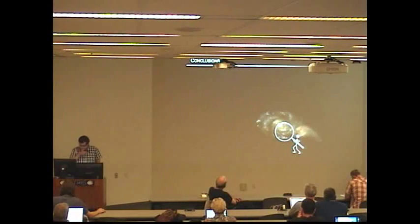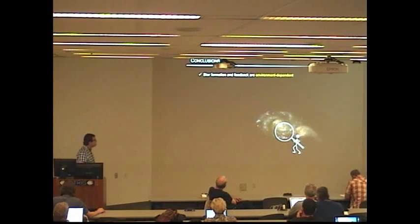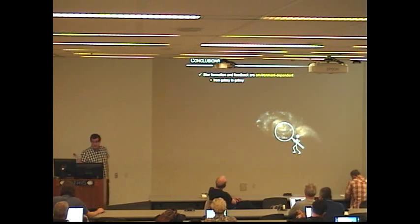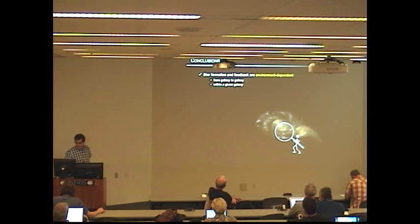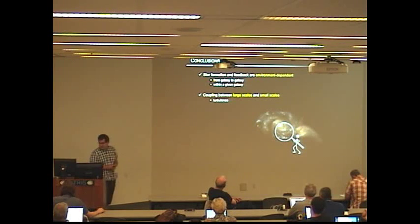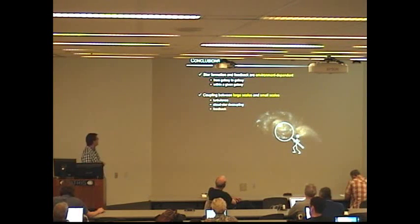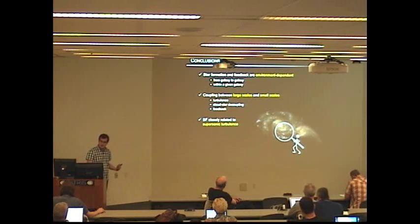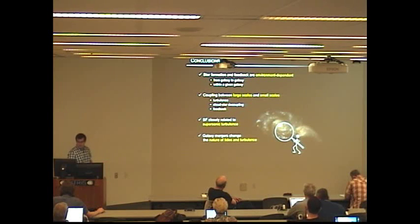So, now I'm reaching my conclusions. Star formation and feedback are environment-dependent. From galaxies to galaxies, obviously, but also within a given galaxy. Don't forget that. There is a coupling between large scales and small scales. Through turbulence, through cloud-star decoupling, for example, through feedback. Star formation is closely related to supersonic turbulence in isolated galaxies and with this modified kind of turbulence in interacting galaxies. The change of tides and turbulence in galaxy mergers affects, and probably, although it's still very speculative, the IMF. Thank you.